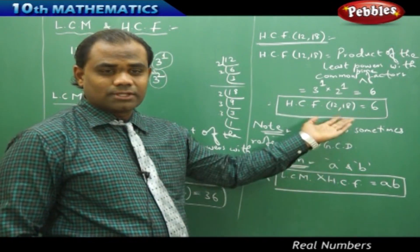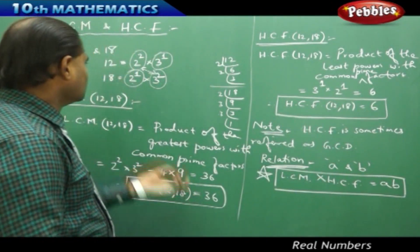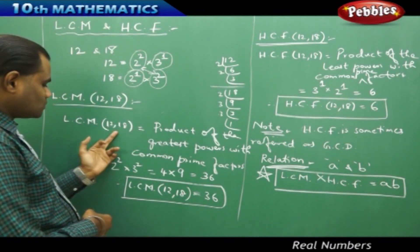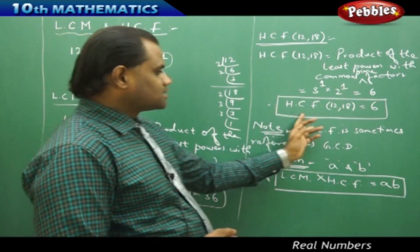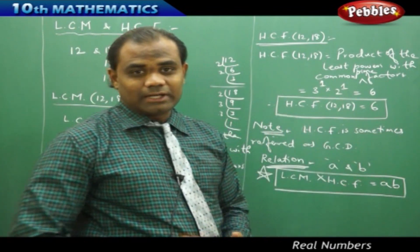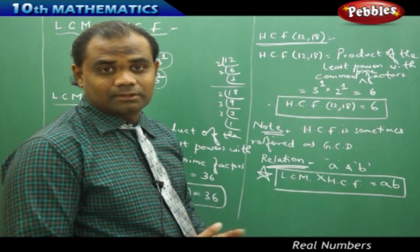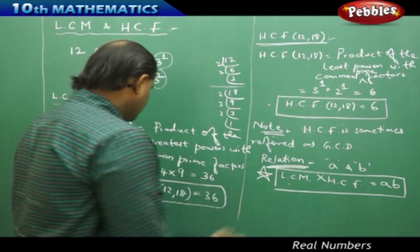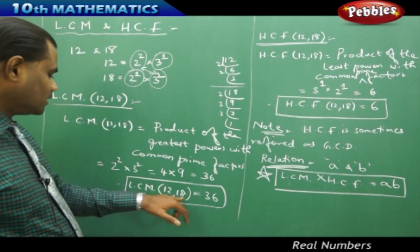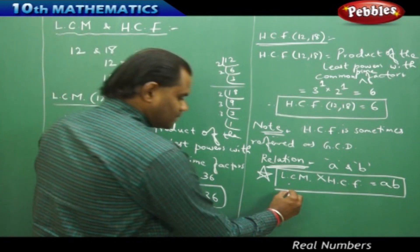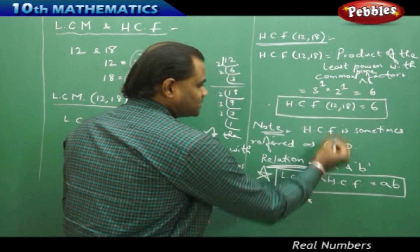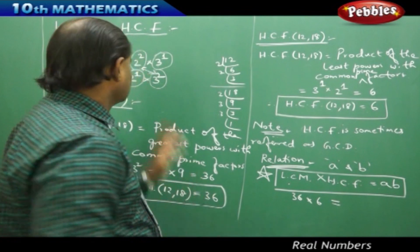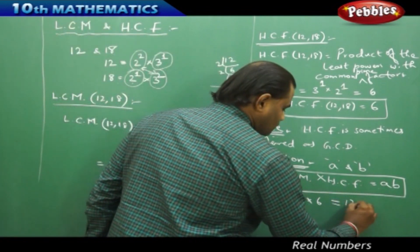This can be verified using the previous example where A and B are 12 and 18 respectively, and LCM is already found to be 36 and HCF is already found to be 6. This verifies for any two numbers A and B. The LCM of 12 and 18 is 36, so 36 times the HCF which is 6 must equal the product of the numbers, which is 12 times 18.